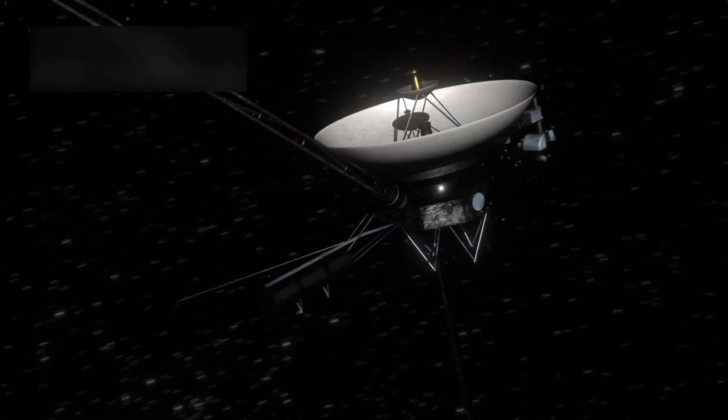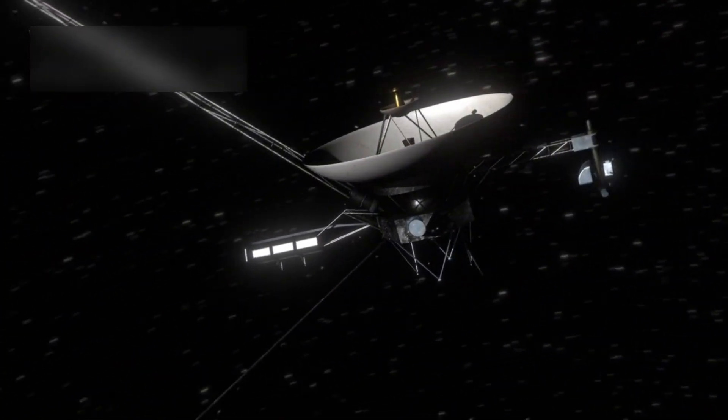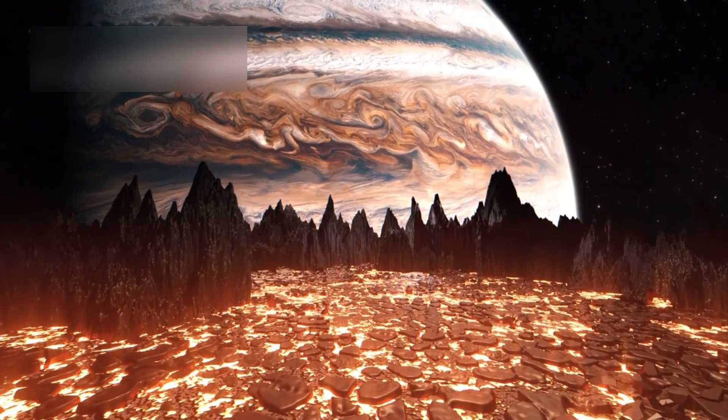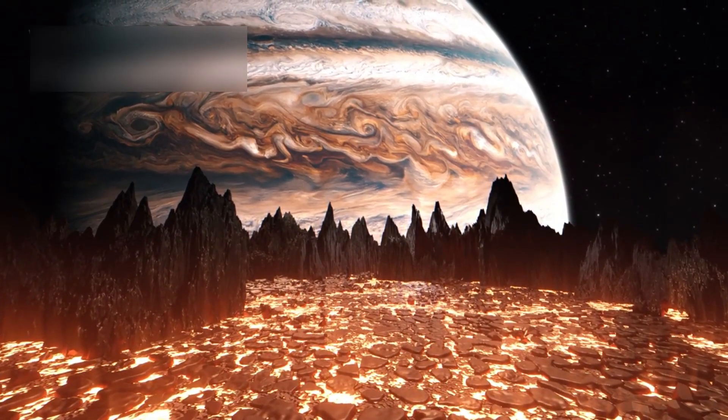Its close-up images of Jupiter's storms and Saturn's rings transformed how we see the outer solar system. It even discovered volcanic activity on Jupiter's moon Io, which was the first time active volcanoes were seen beyond Earth.